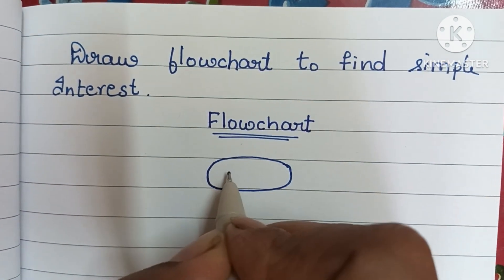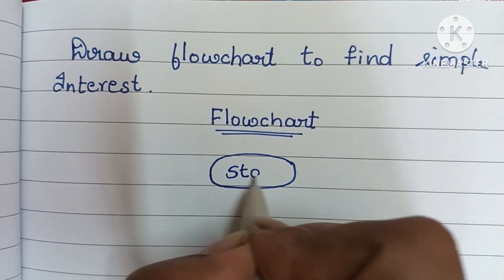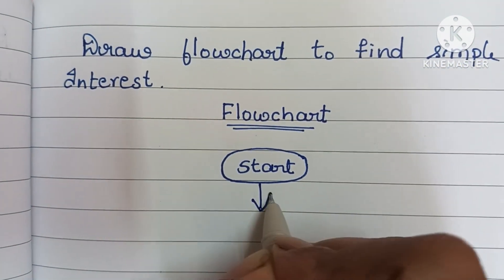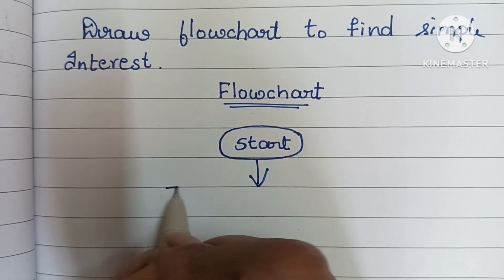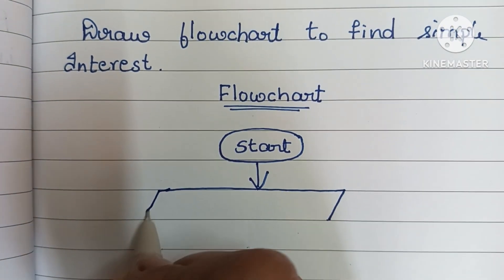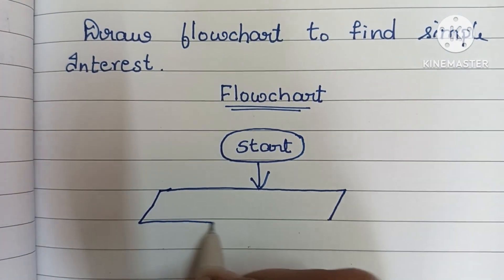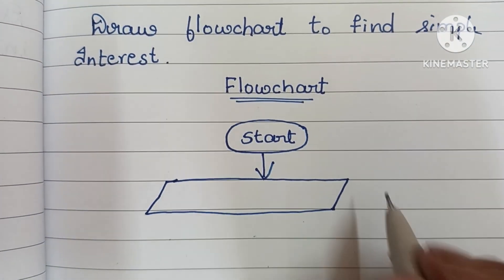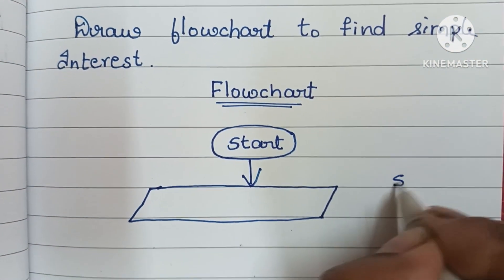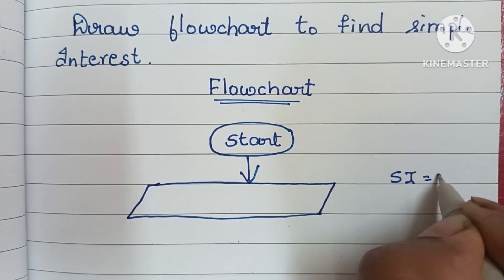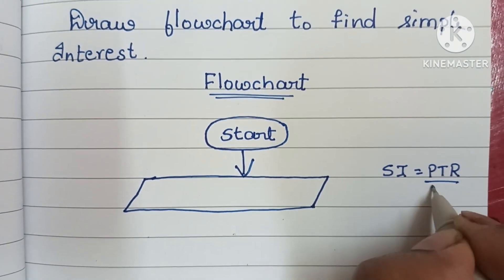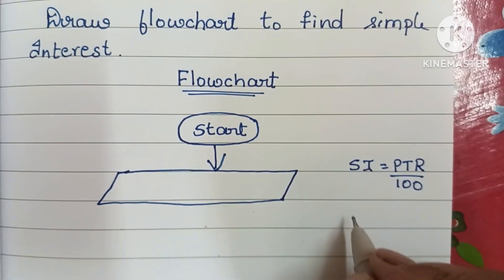A flowchart always starts with a start statement, which is written within an oval shape. Next, we have to read the input values. Input values are always written within a parallelogram shape. To find simple interest, the formula is SI = PTR divided by 100.